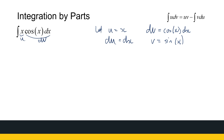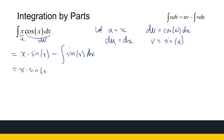Note that v can be sin(x) plus any constant; I'm choosing the constant to be 0 to keep things simple. Using the formula, this integral equals u·v minus the integral of v·du, which is x·sin(x) minus the integral of sin(x) dx. That gives x·sin(x) minus (−cos(x)) plus C, so the answer is x·sin(x) + cos(x) + C.